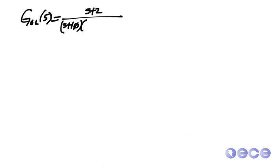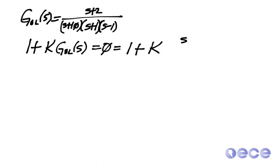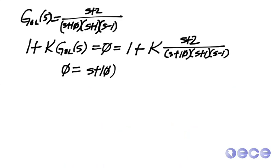In order to do this, we're going to multiply through and get our closed-loop transfer function. One plus k times Gol of s equals zero equals one plus k times those pole values as we multiply them through. So we have a little bit of algebra to do here.